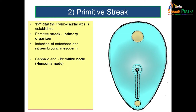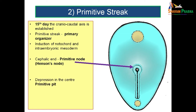Let us concentrate on the primitive streak, its parts, and how it gives rise to the notochord and intraembryonic mesoderm. At the cephalic end of the primitive streak, there is a slight elevation known as the primitive node or Hensen's node. In the middle of Hensen's node, there is a depression known as the primitive pit.